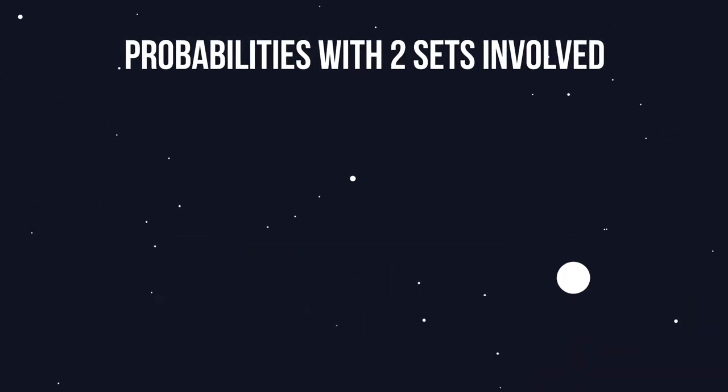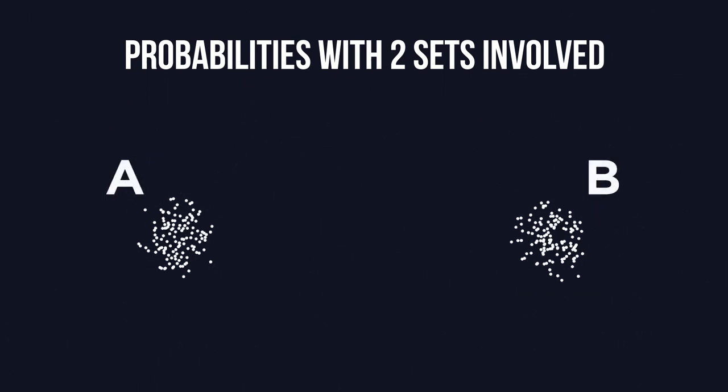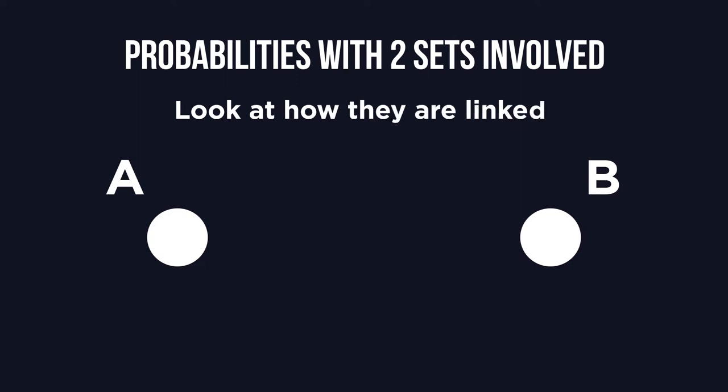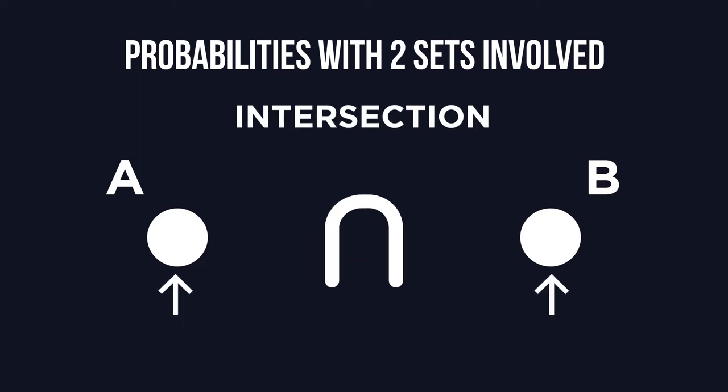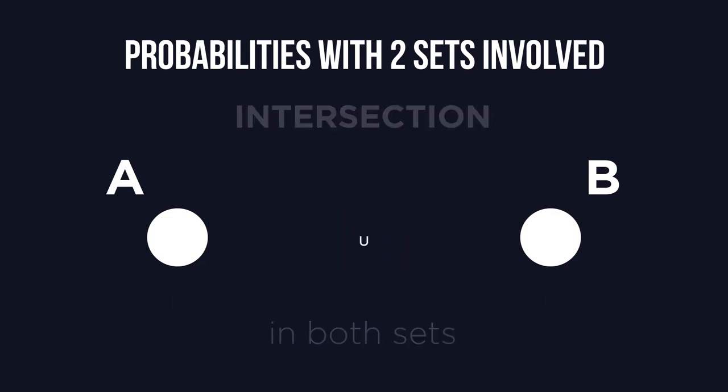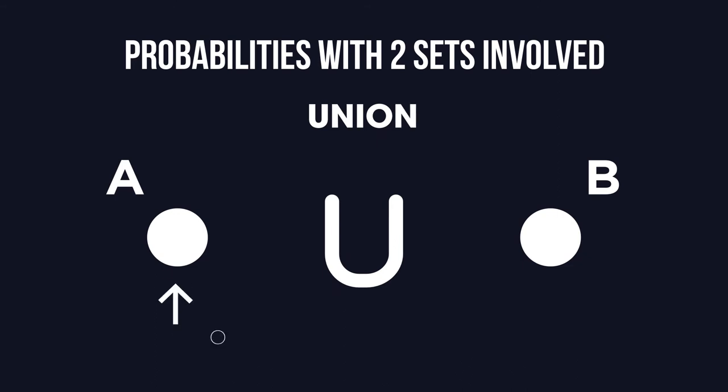We now need to look at probabilities with 2 sets involved. When we have 2 sets, we can look at how they are linked. We use this symbol, called intersection, to say something is in both sets we are looking at. We can use this symbol, union, to say that an object is in one set or the other.